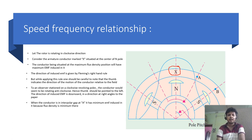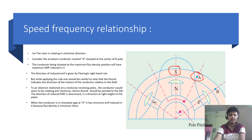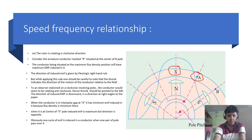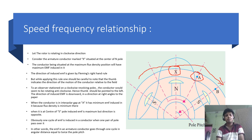When the conductor is in an inter-polar gap, i.e. at position A, it has minimum EMF induced in it because the flux density is minimum there. But when it is at the centre of the S-pole, according to Fleming's direction rule, the induced EMF will be maximum but in the opposite direction. Obviously, one cycle of EMF is produced when one pair of poles passes over it. In other words, EMF in an armature conductor goes through one cycle in an angular distance equal to twice the pole pitch.